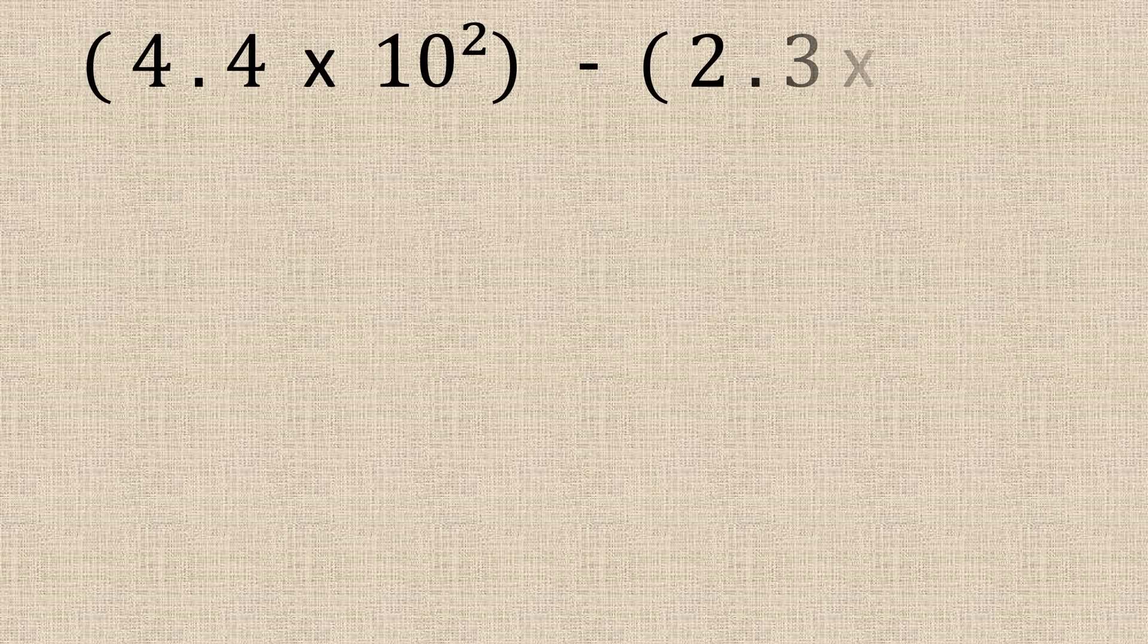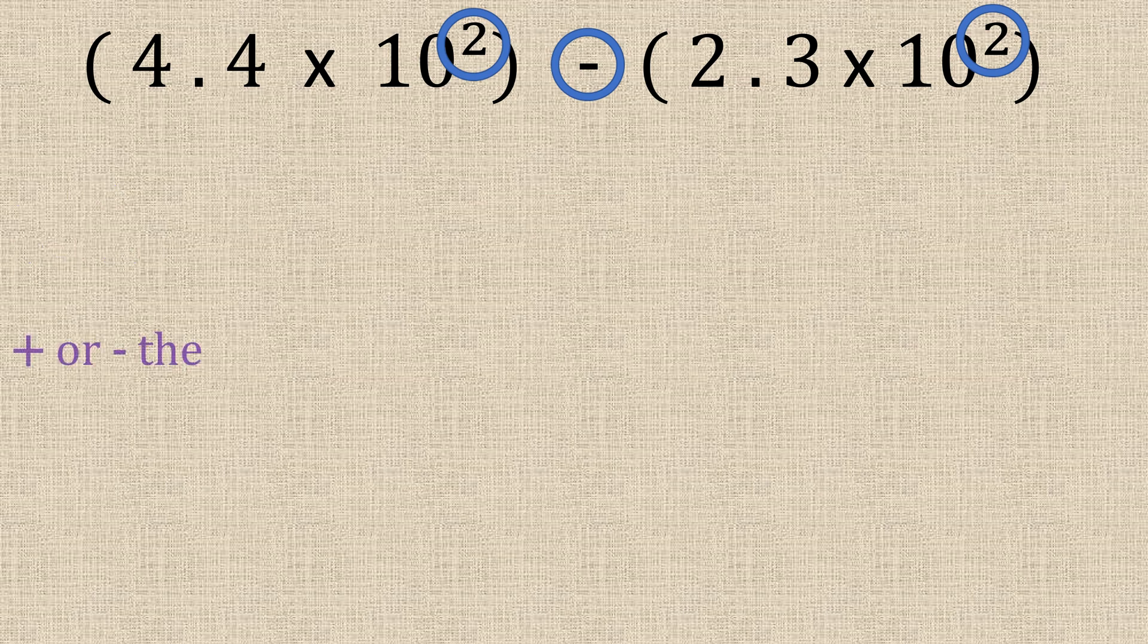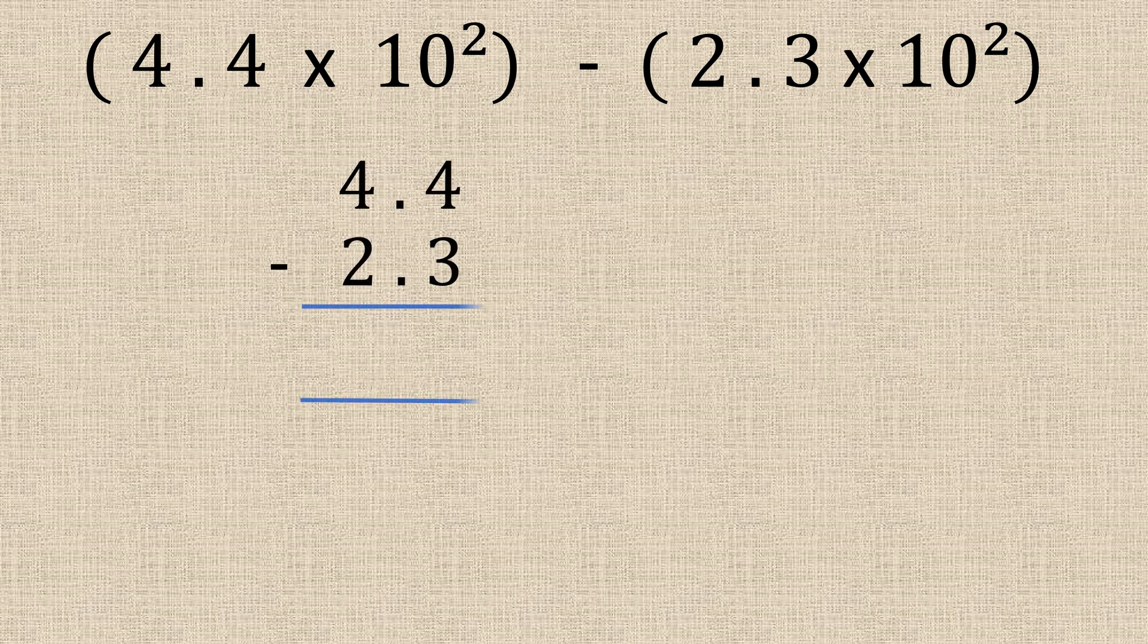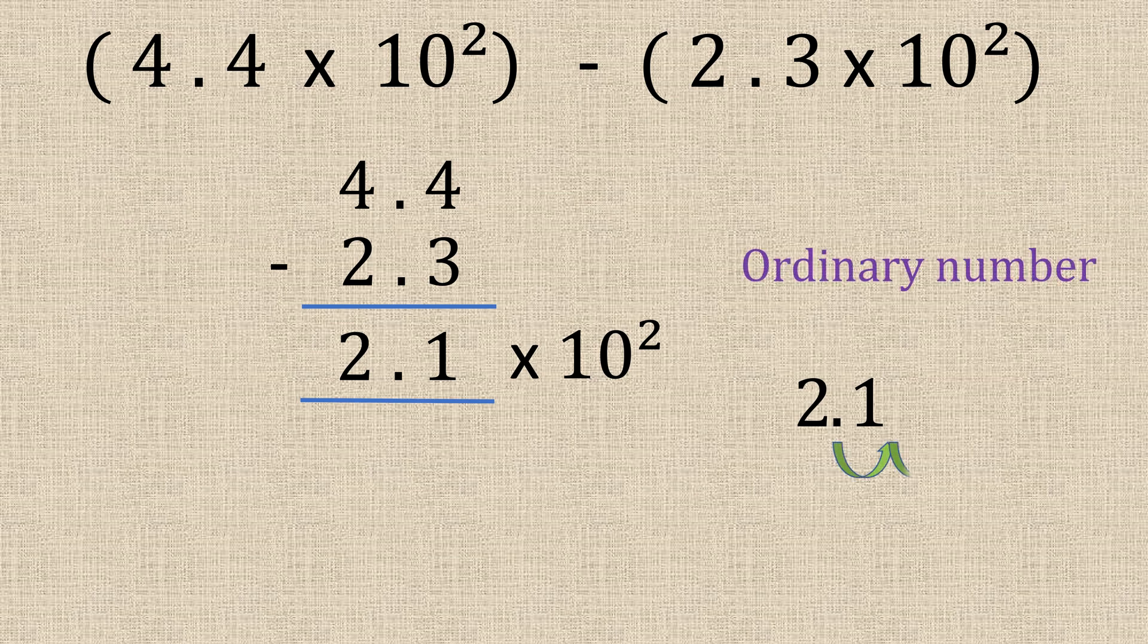So for this question it's a subtraction but it's the same powers. So we can actually just do it by calculating the front two numbers. So 4.4 minus 2.3 would give us 2.1 and that's in the same power. So that would be times 10 to the power of 2. But if they wanted the answer in ordinary numbers you would need to change it back like so.